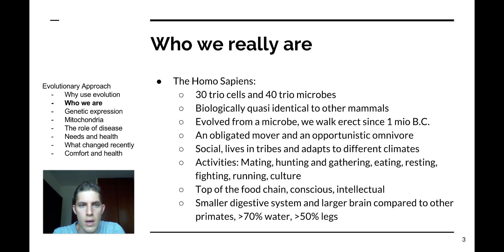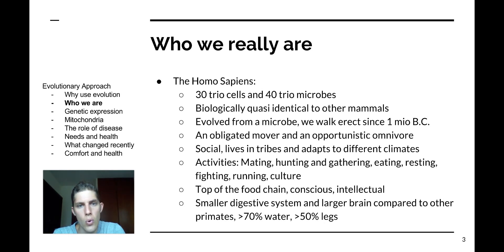These are very important points. Our activities over the last hundreds of thousands of years — or even millions — consist of mating, hunting, gathering, eating, resting, fighting, running, and culture. Culture means it's the product of our work — building tools or building shelter, for example. We are on top of the food chain. We are conscious and intellectual, especially compared to other species. Compared to other primates more specifically, we have a smaller digestive system and a larger brain.